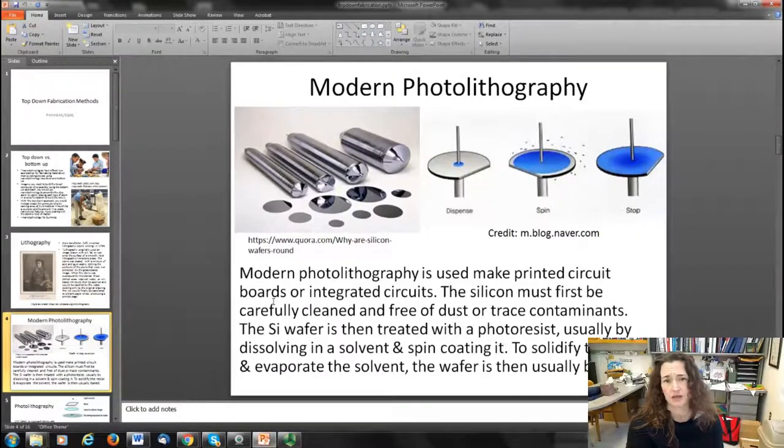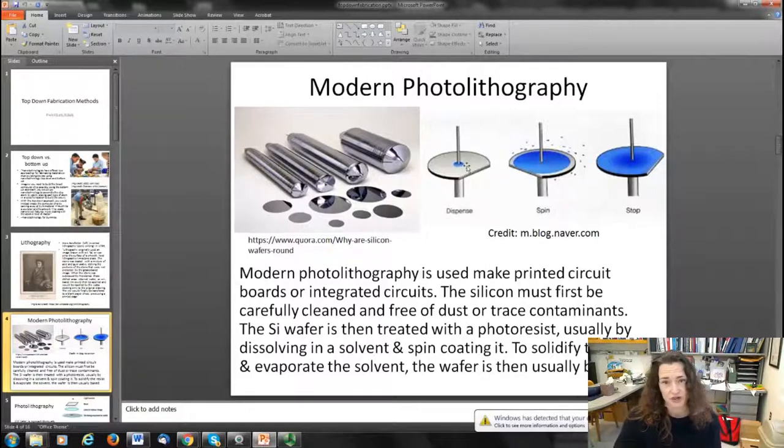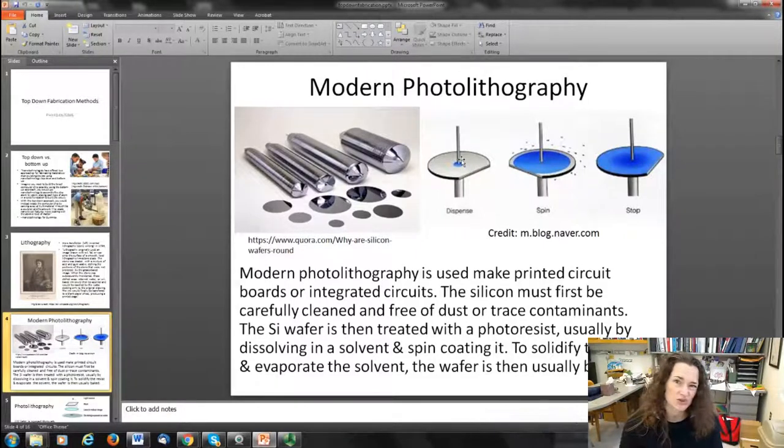The silicon wafers are then treated with photoresist, usually by dissolving the photoresist material like polymethyl methacrylate in a solvent and then spin coating it on. Spin coating is depicted here. Basically what happens is you drop the liquid on the center of the disc, then you spin it at high speeds—two thousand, three thousand revolutions per minute.